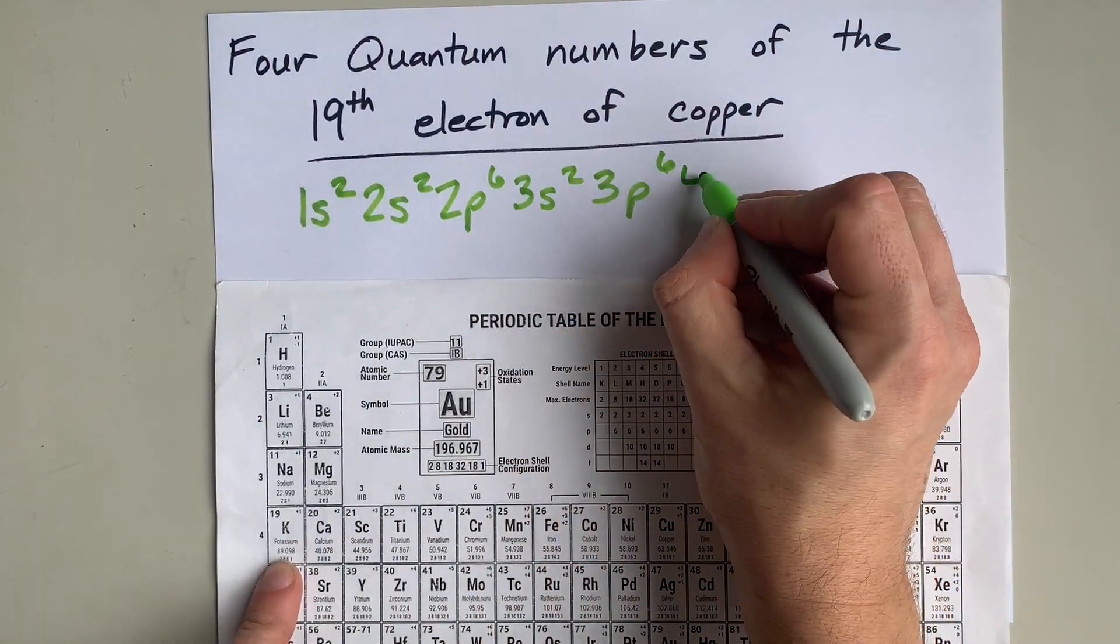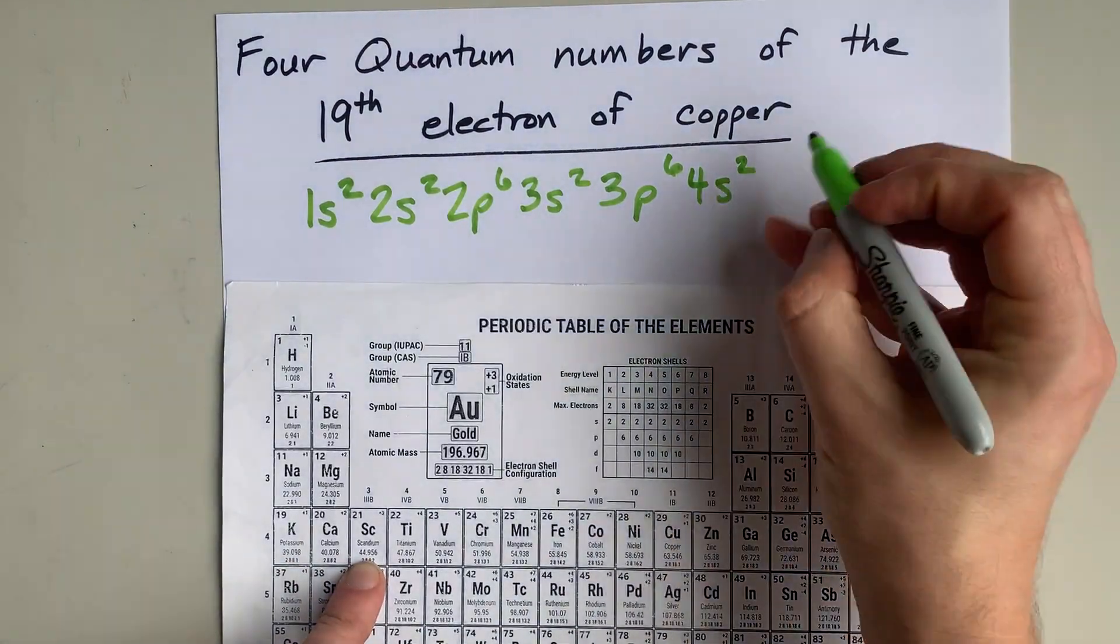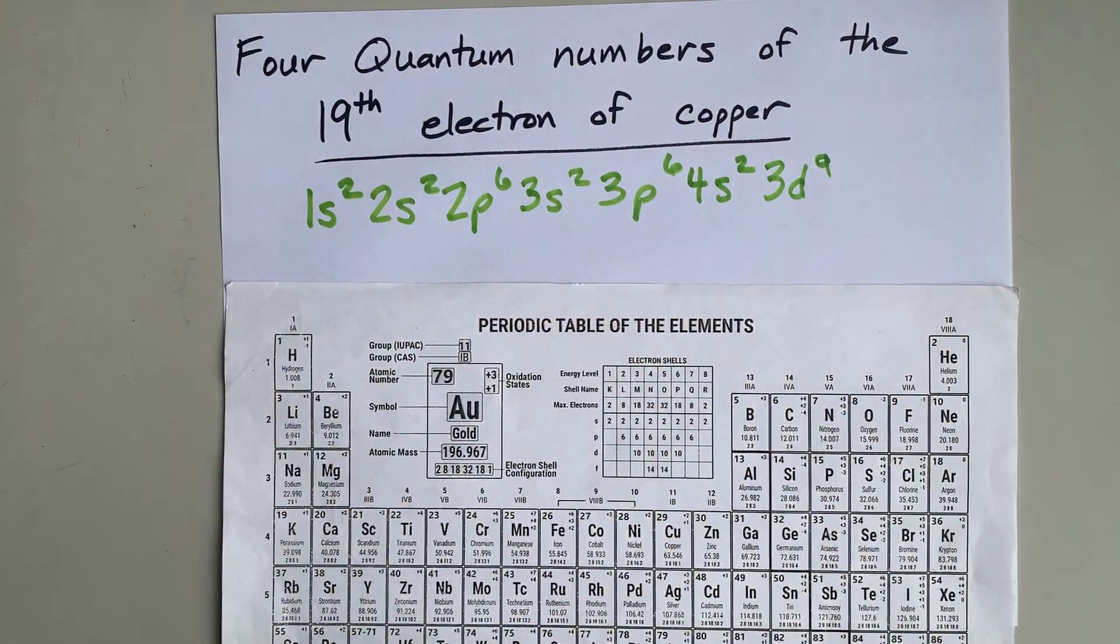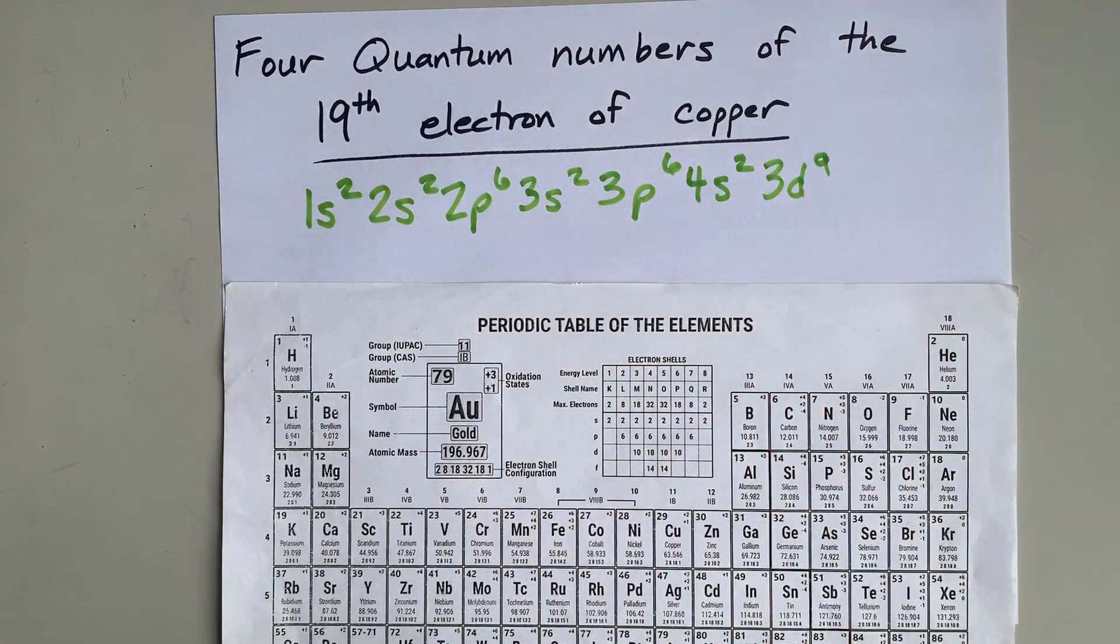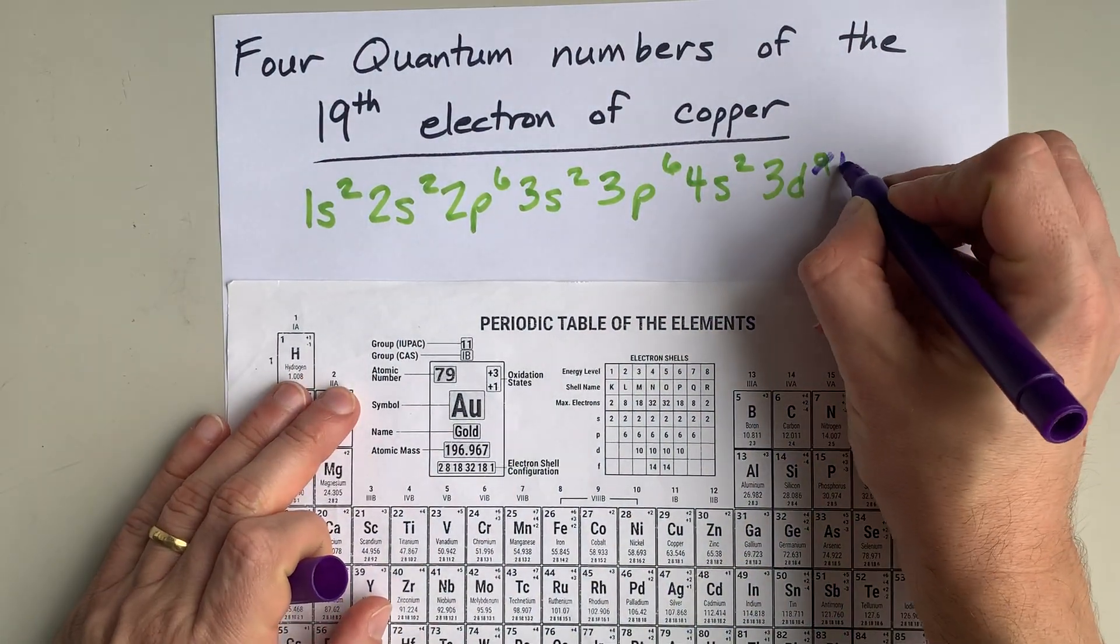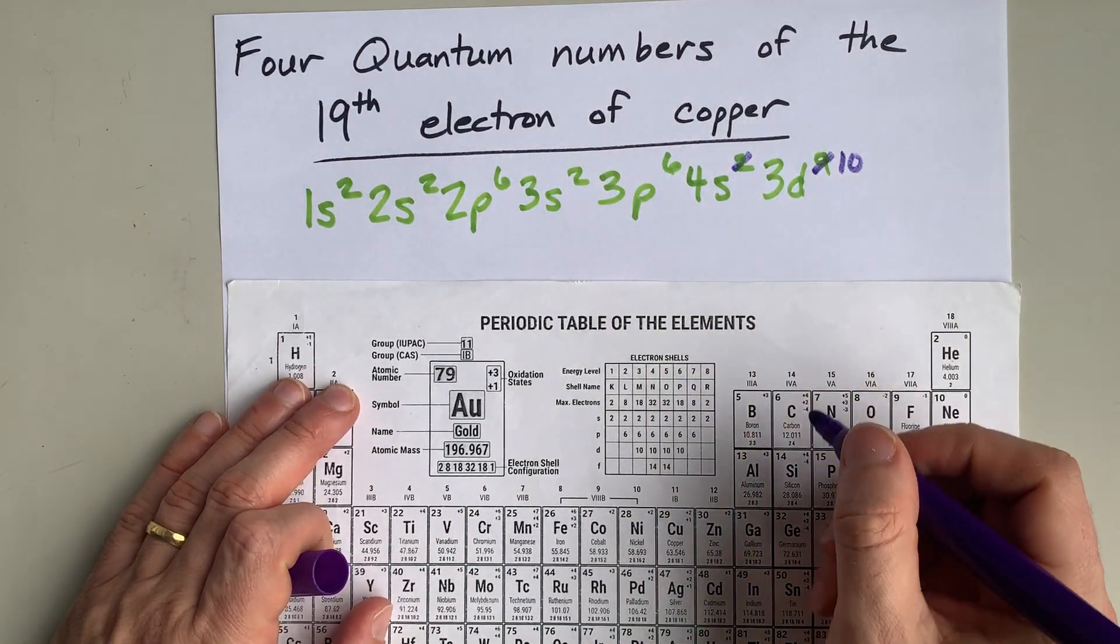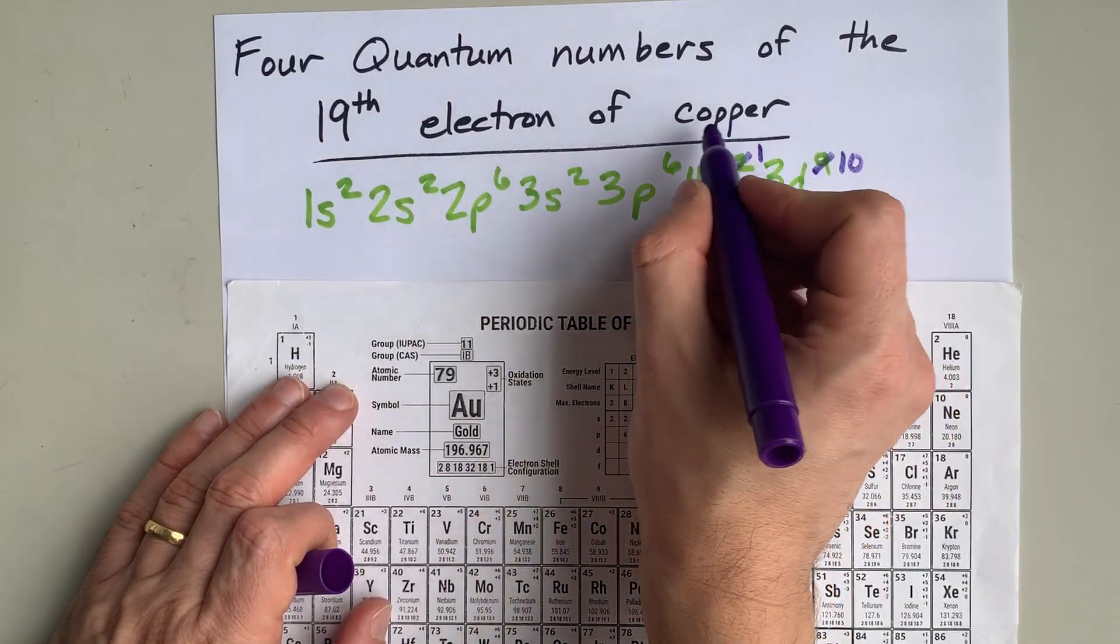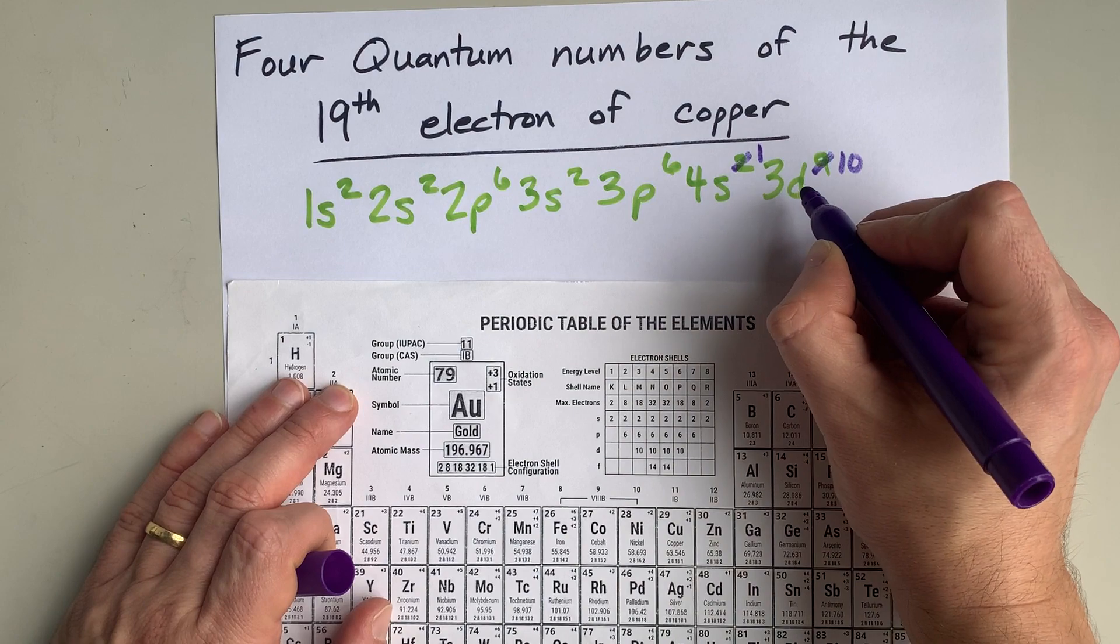This is 4s2, and then this is 3d9. But you have to remember that for neutral copper, or any atom really, d9 will form d10 at the expense of one of the earlier s electrons. So the electron configuration for neutral copper is 4s1, 3d10.